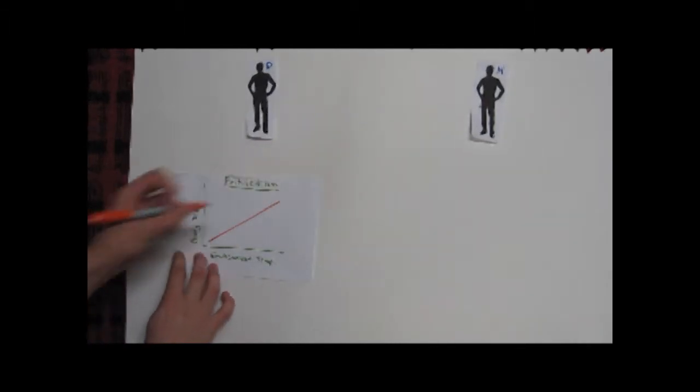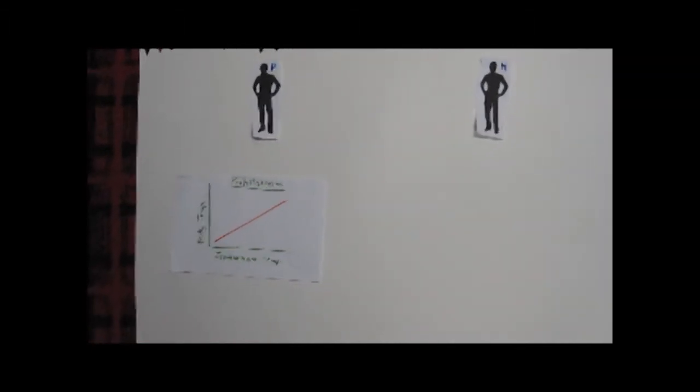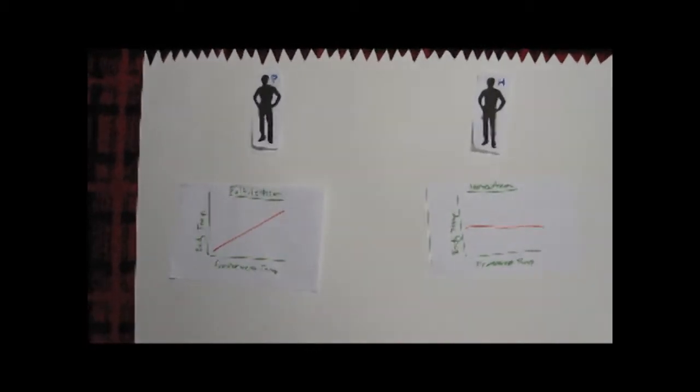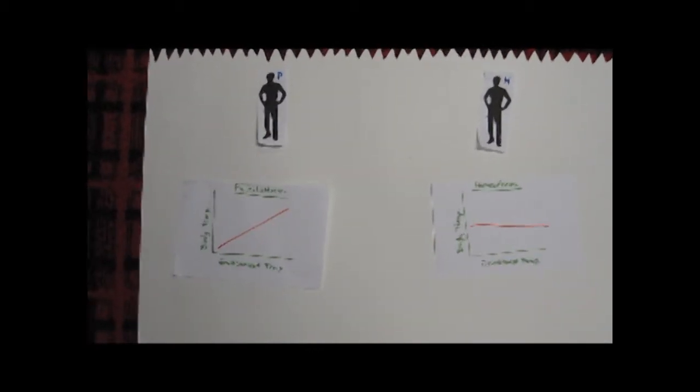But hold on there. These aren't the only terms related to body temperature. Two new, hopefully you don't get these in a spelling bee words, are poikilotherm and homeotherm. A poikilotherm is an animal whose body temperature varies with its environment. Whereas a homeotherm has a relatively constant body temperature. An example of a poikilotherm is a largemouth bass.